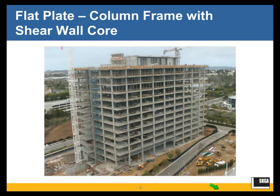We are talking about structures like you see in the picture. Flat plate column framing is evident. Flat plate is a slab without beams, without any thickening of the slab, that is supported directly on columns. You can see very clearly in the picture the flat plate column frames. What you don't see all that clearly — until you look here — is that there is a shear wall core in the middle of the structure.